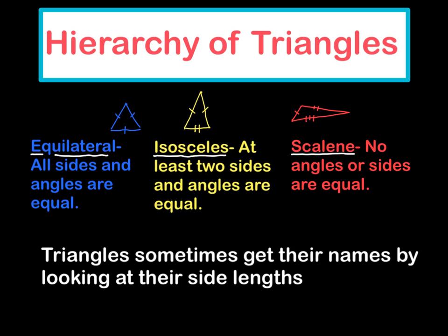And here what you'll see is we have three types. I color-coded them, and at the bottom here I wrote that triangles sometimes can get their names by looking at their side lengths. So what you may notice is you may see some lines here. That line, the fact that it's one dash and one dash, that means that's a way that in math you can show that all sides are equal.